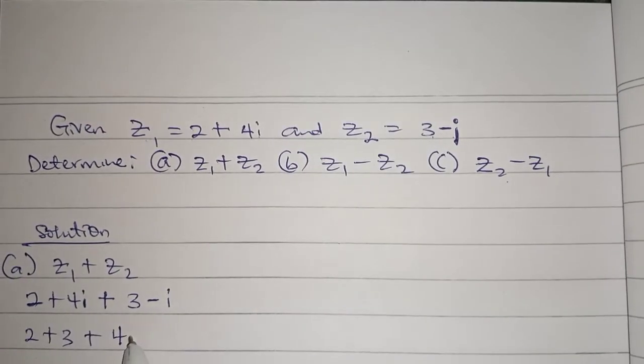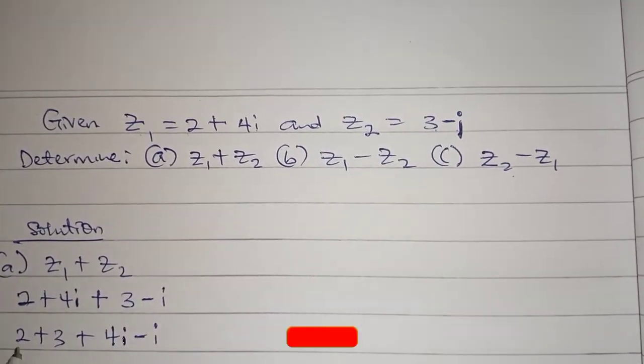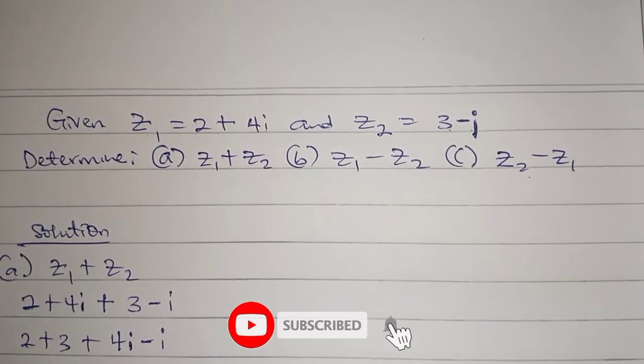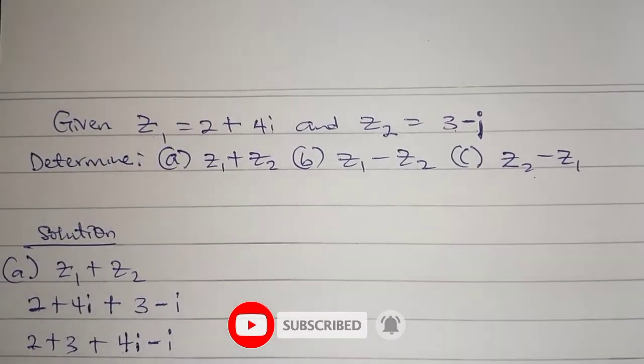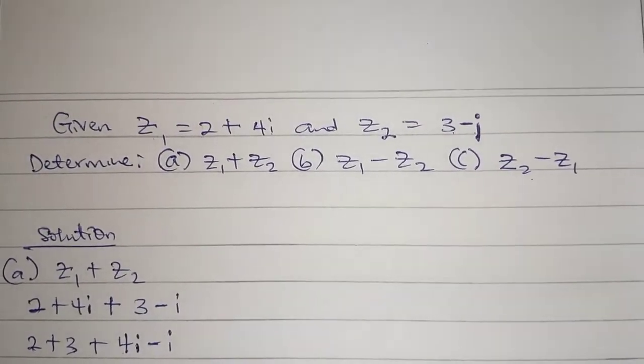So 2 plus 3 gives us 5, 4i minus i gives us 3i. This is equal to z1 plus z2. We have found this.